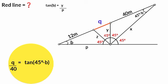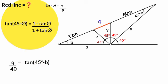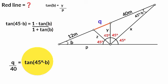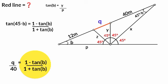From trigonometry, there is an identity that tan(45° − theta) equals (1 minus tan(theta)) over (1 plus tan(theta)). If we assume theta equals B and substitute, tan(45° − B) equals (1 minus tan B) over (1 plus tan B). So Q over 40 equals (1 minus tan B) over (1 plus tan B).